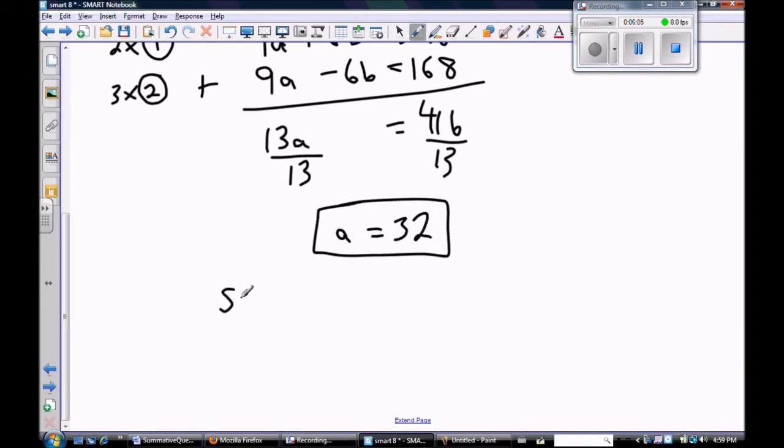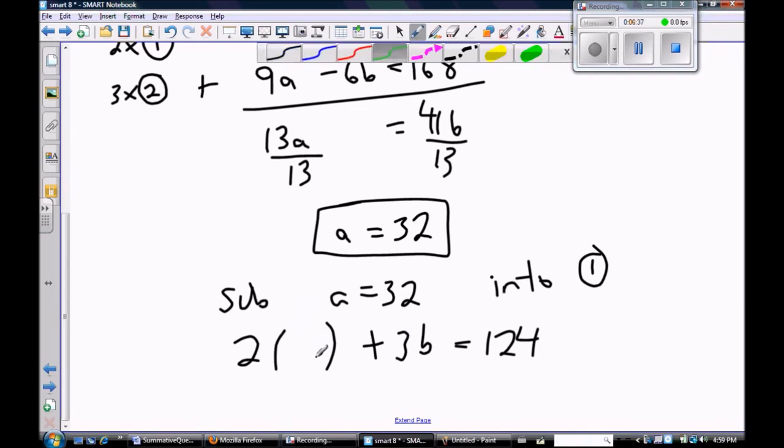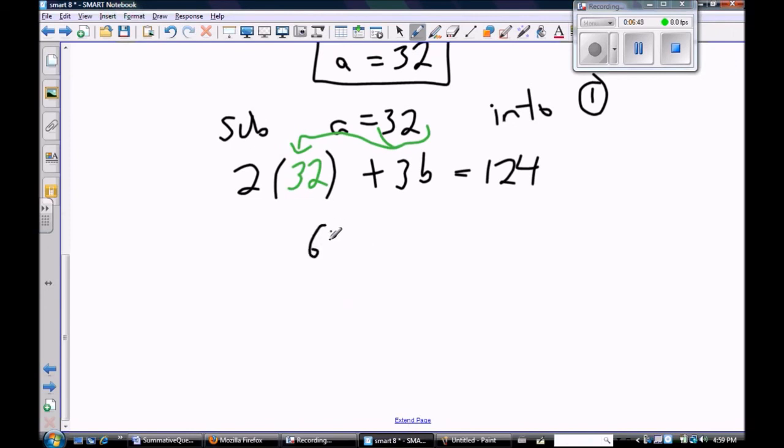And now that I know a, I can find b. So I'm going to sub a equals 32 into equation number one. So what's equation number one? 2a plus 3b equals 124. So here's how I like to show substitution: you'll notice I didn't write the letter a, I put a bracket instead. Now I can show that I'm substituting this value into this bracket like that. So instead of 2 times a, I have 2 times 32. So 2 times 32 is 64 plus 3b equals 124. Now I'm going to subtract 64 from both sides, that gives me 60, and then dividing by 3 I get b equals 20.